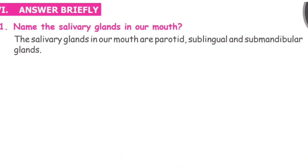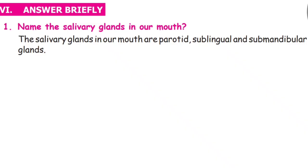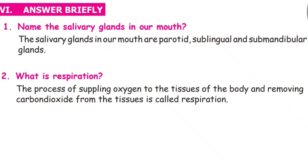Next, Section 6: Answer briefly. Number 1: Name the salivary glands in our mouth. The salivary glands in our mouth are parotid, sublingual, and submandibular glands. Number 2: What is respiration? The process of supplying oxygen to the tissues of the body and removing carbon dioxide from the tissues is called respiration.